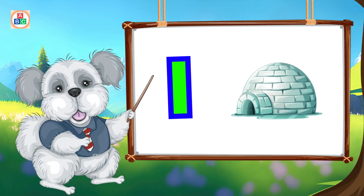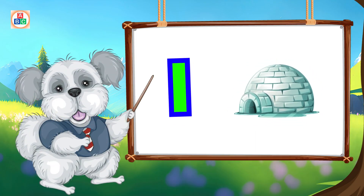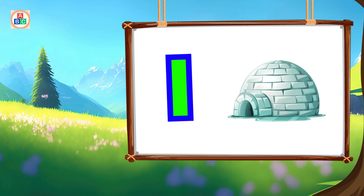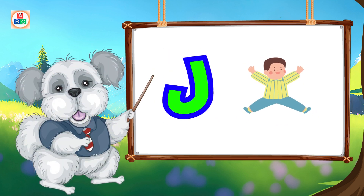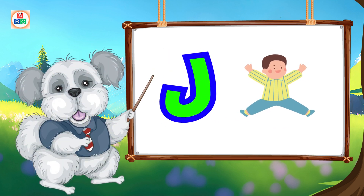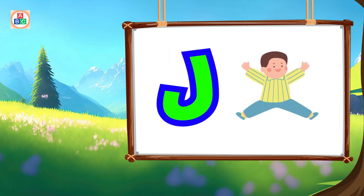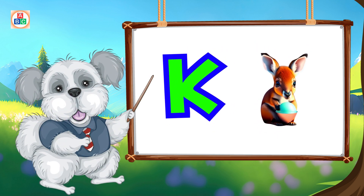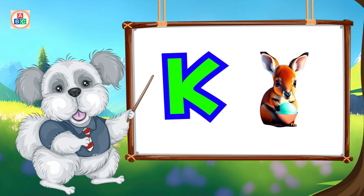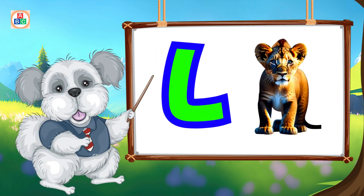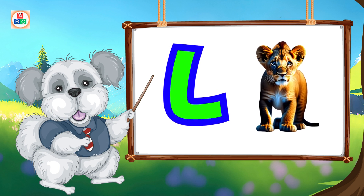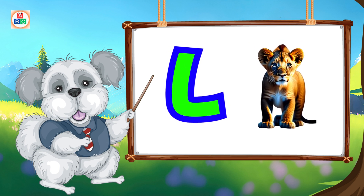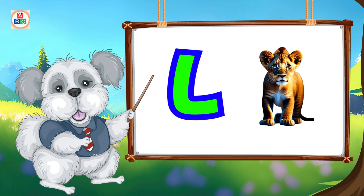I is for igloo, i-i-igloo. J is for jump, j-j-jump. K is for kangaroo, k-k-kangaroo. L is for lion, l-l-lion.